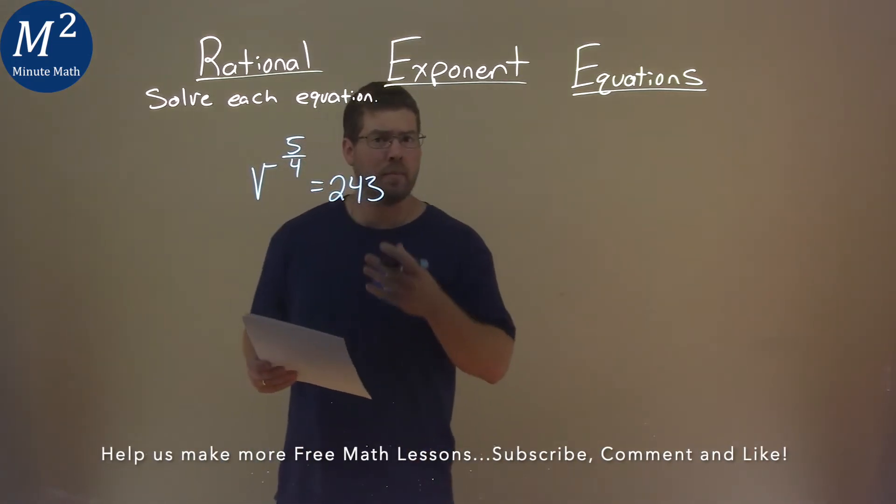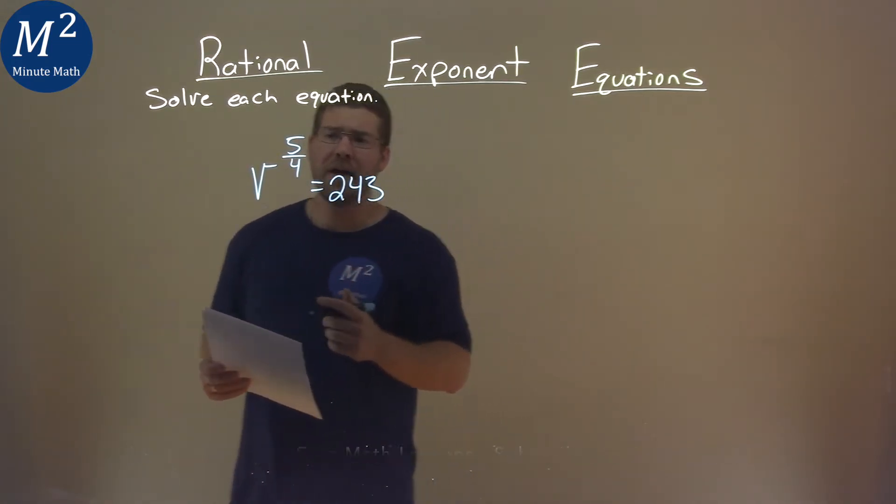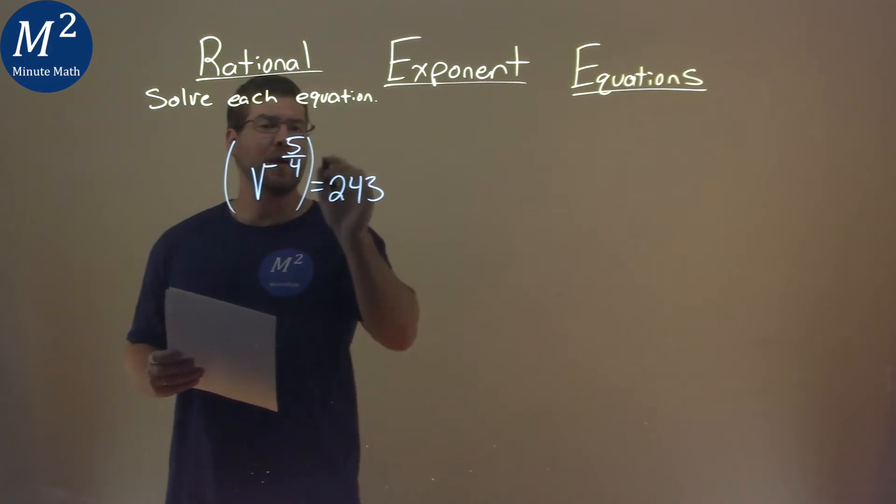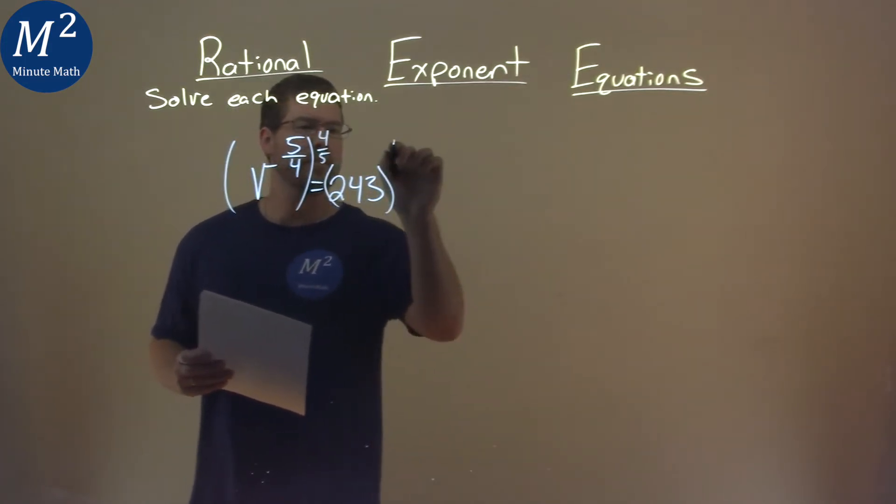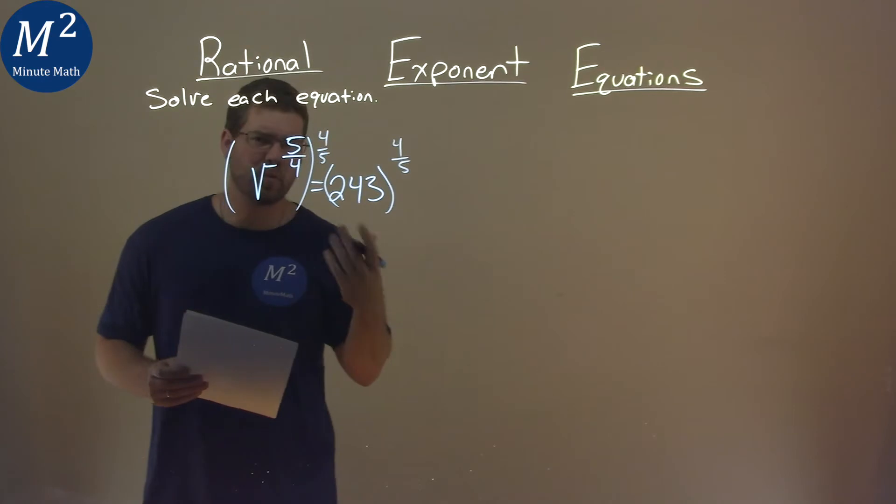Well to get rid of the 5 fourths power here, I have to take both sides and raise them to the 4 fifths power, like so. That's our rules of exponents.